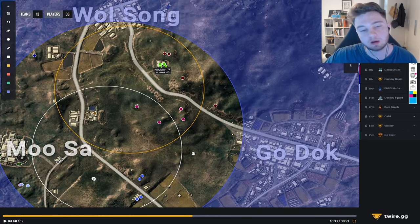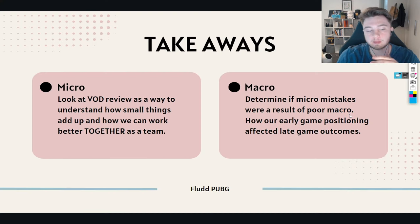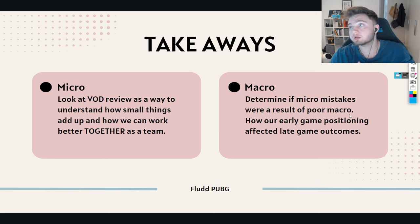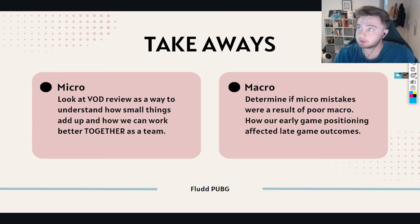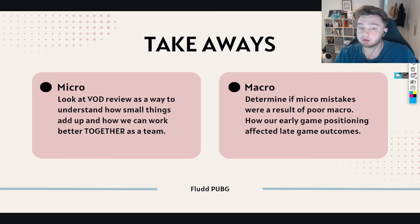If they have this exact zone again and don't have access to space or control and have to sit in the compound in other zones, they may have a much easier time with a better understanding of how to play. That's how we want to VOD review properly — understanding how to play in future games, because we can only learn from our mistakes. Key takeaways: we should be discussing our micro mistakes and looking at how small things add up and how we can work better together, but we don't focus too much on them because these mistakes always happen every game.